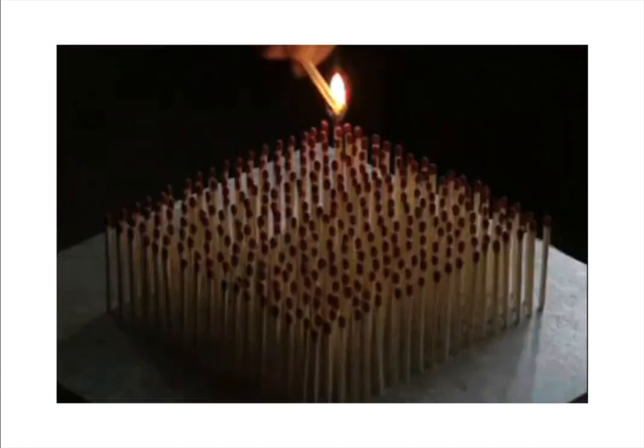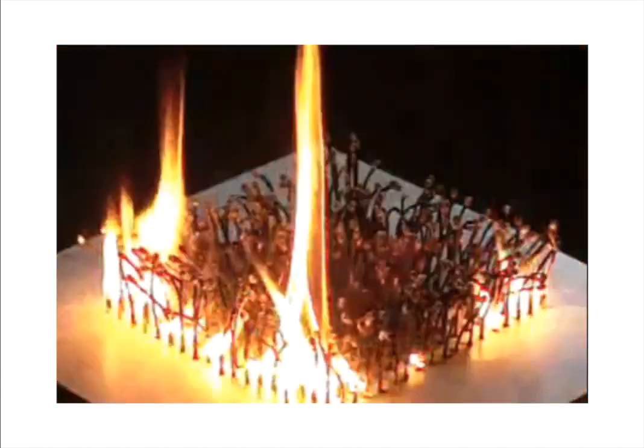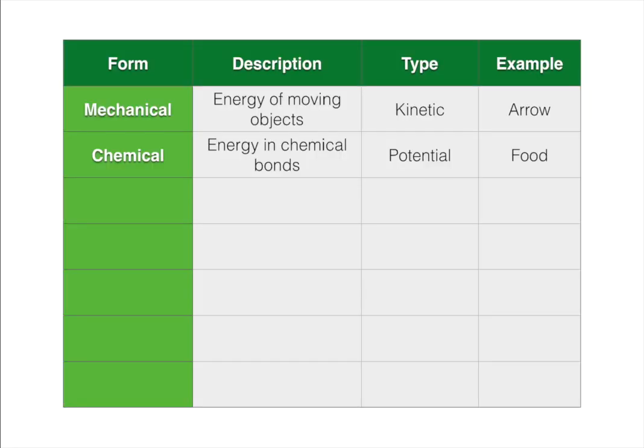When we digest our food, our bodies break the chemical bonds in the food and provide us the energy to do things. Anytime you see a chemical reaction like this — matches catching flames — the chemical bonds are being broken and the energy is being released in order to do work. Chemical reaction, chemical bonds, chemical energy. Chemical energy is the energy in chemical bonds. It's potential energy because it's stored, not moving.